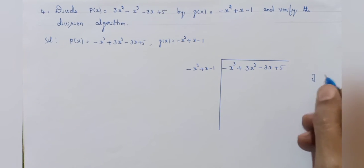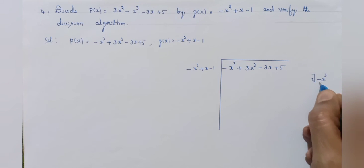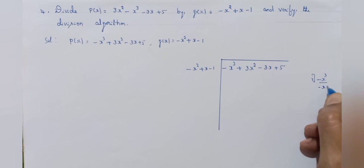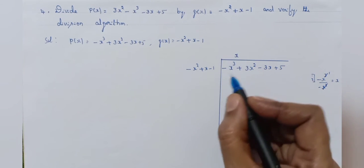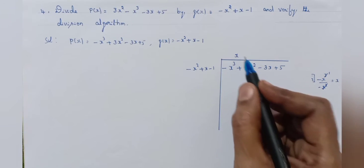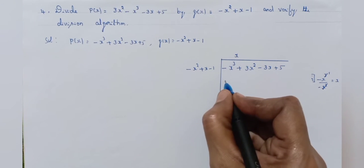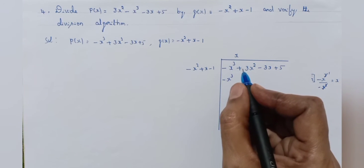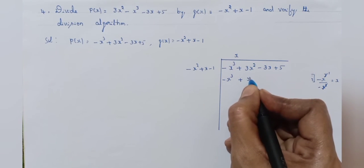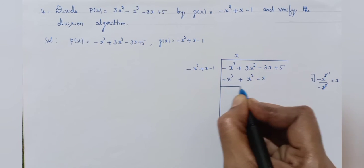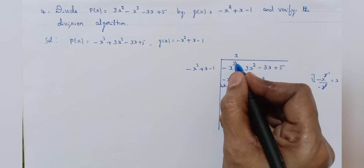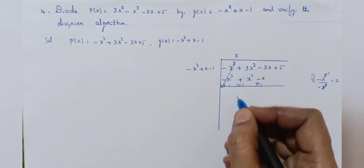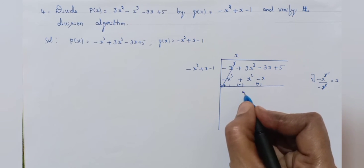Divide the first term of the dividend by the first term of the divisor. Cancel x square — you will get x. Write x in the quotient place. Multiply minus x square plus x minus 1 by x: minus x square into x is minus x cube, plus x into x is plus x square, then minus x. Change the signs: minus plus minus. Minus x cube plus x cube get cancelled. Plus 3x square minus x square is 2x square.